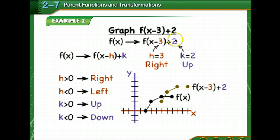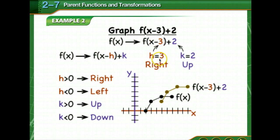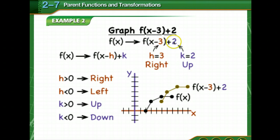If a number is added or subtracted outside the parentheses — we call this k — if k is positive, it's going to go up; if k is negative, it's going to shift down. Now, inside the parentheses it's sort of backwards: if it's negative, it goes to the right; if it's positive, it goes left. That's the opposite of what we're used to. If you think about setting x minus 3 equal to 0, you add 3 to both sides, so a negative inside gives a positive result, meaning you go to the right.